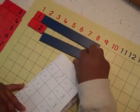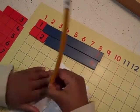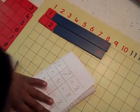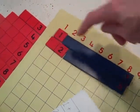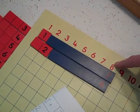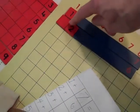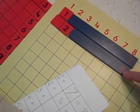And then you write the blue. The blue is the answer. So let's see what you have. Let's read this. Say one plus seven equals eight. And two plus six equals eight.